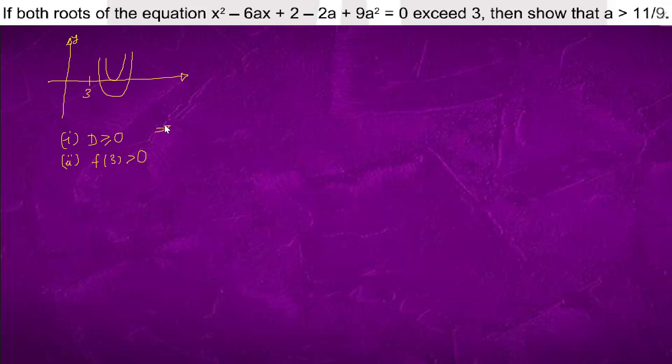We'll solve conditions 1 and 2. First, solving D ≥ 0, which is b² - 4ac ≥ 0.